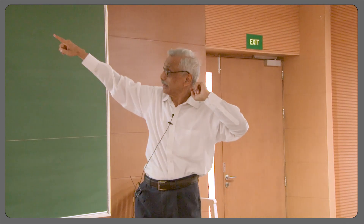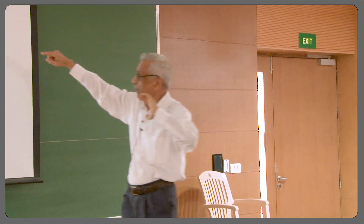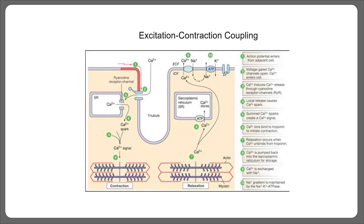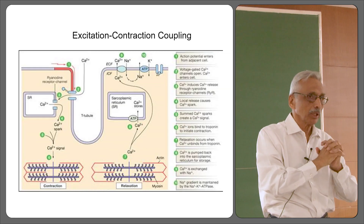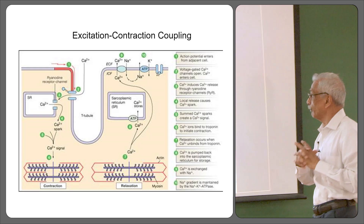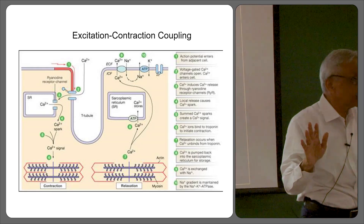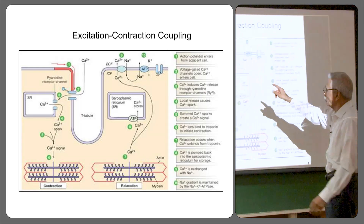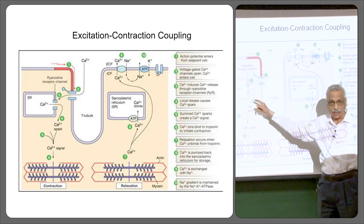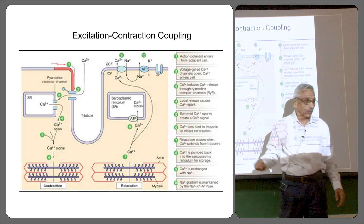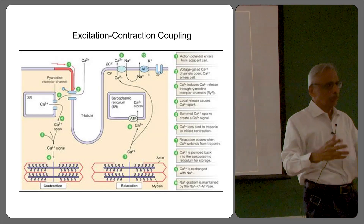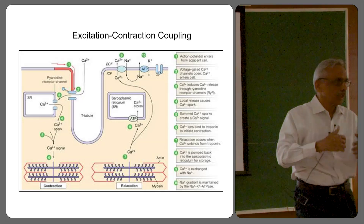Number 3 is on the plasma membrane there — you can see that red part here. The message is that an action potential, or an electrical signal, has arrived. Now, who initiated the signal we will see later. As a result of that, in the plasma membrane we have DHPR — the voltage-gated ion channel — and as a result of the action potential arriving, the calcium ion channel has opened and allowed calcium ions to flow through.